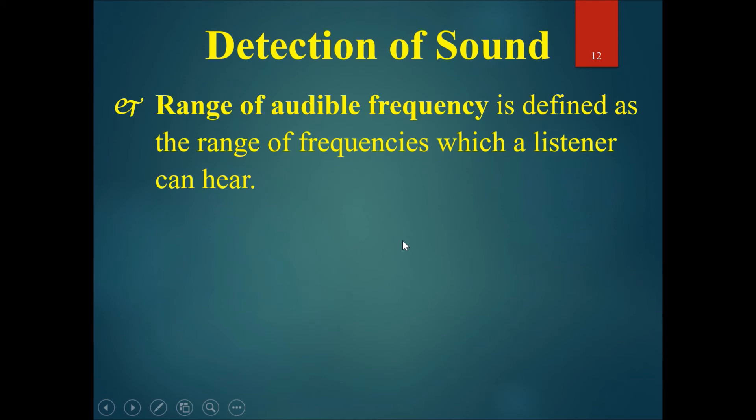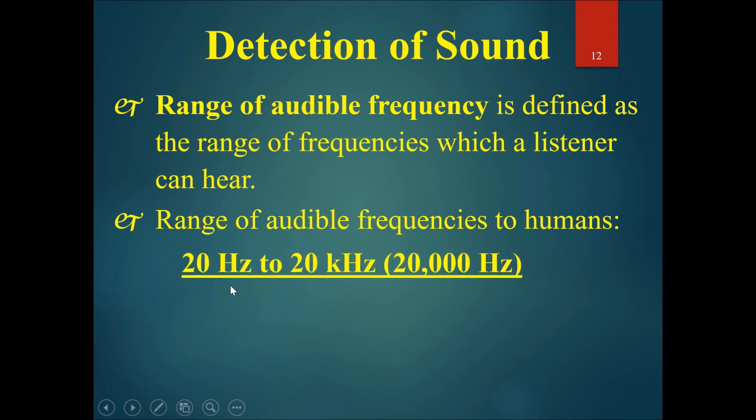The range of audible frequencies is defined as the range of frequencies which a listener can hear. For humans it will be 20 hertz to 20,000 hertz. 20 hertz would be the lower limit of our audibility, which is the lowest sound that you can possibly hear, while 20,000 hertz would be the upper limit of our audibility, the highest sound that we can possibly hear.